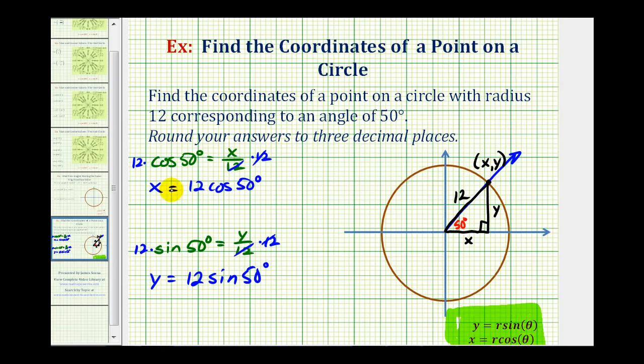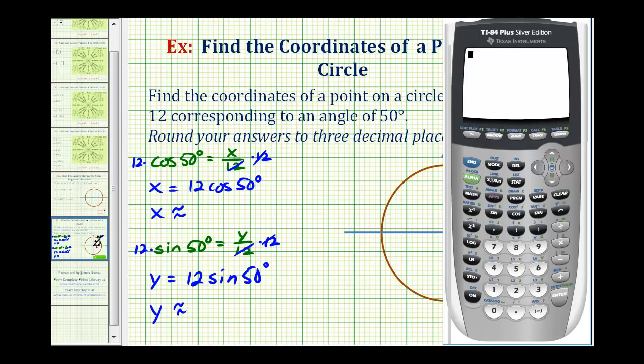So now we can find the approximate value of this using the calculator, and we're asked to round to three decimal places. It is important to verify the calculator is in degree mode, so I'll press the mode key. Notice how this calculator is in degree mode. So I'll go back to the home screen. 12 times cosine 50 degrees will give us the approximate x-coordinate. It was approximately 7.713.